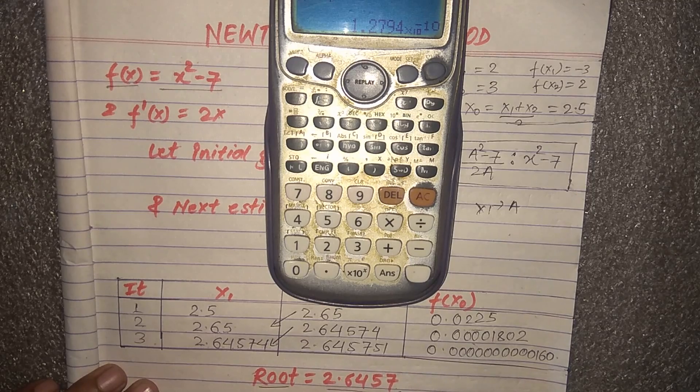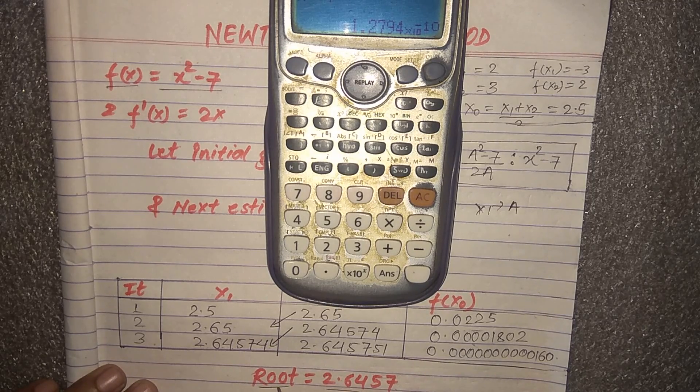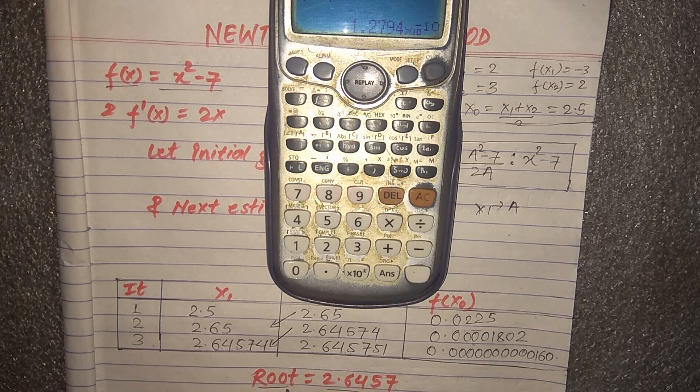Finally we get the root = 2.6457. So in this way we can calculate the root using Newton's Raphson method. Thank you.